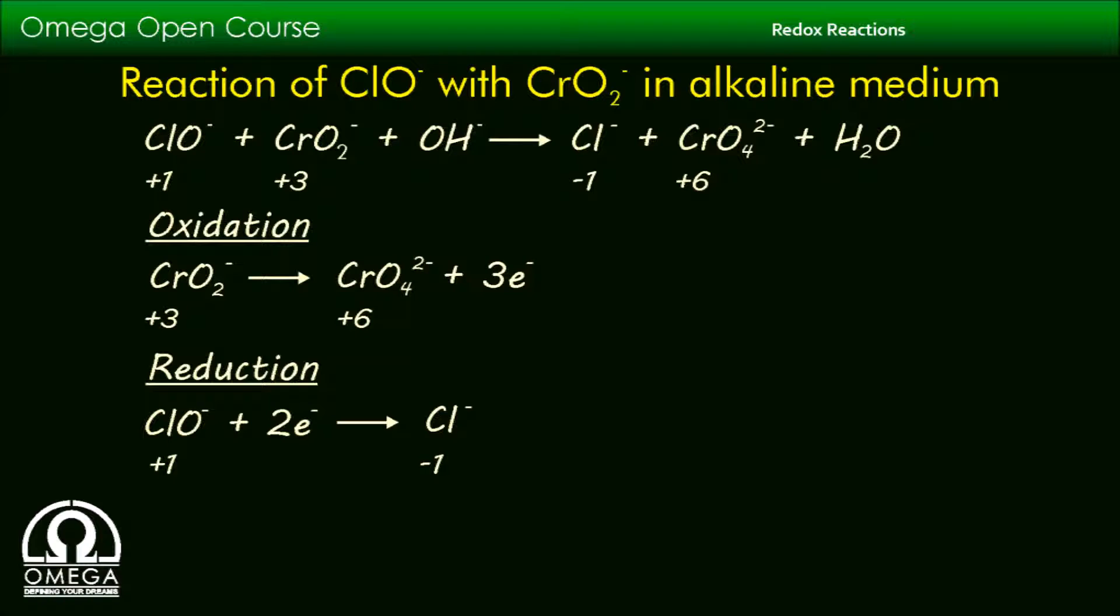Since 3 electrons are released in oxidation and only 2 electrons are absorbed in reduction, in order to equate the number of electrons on both sides, we must multiply the oxidation half by 2 and the reduction half by 3.